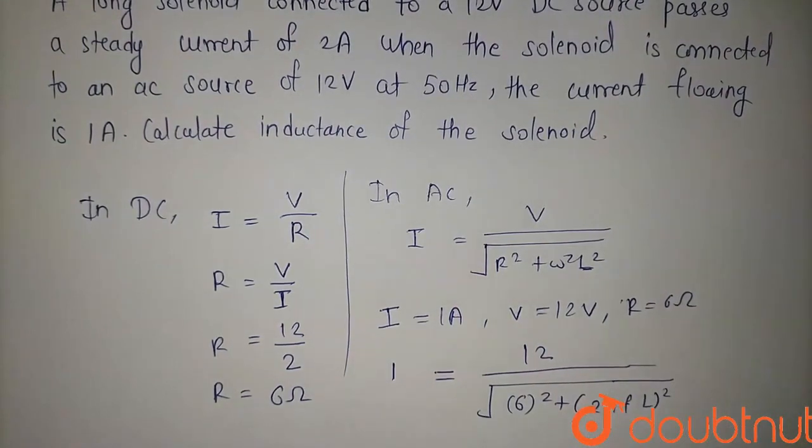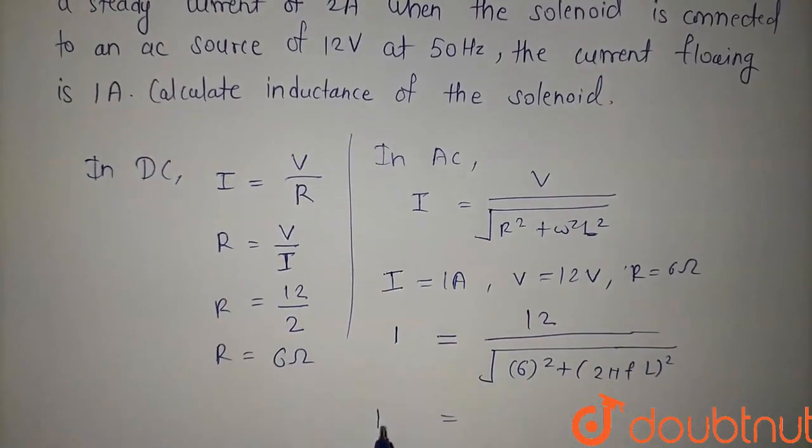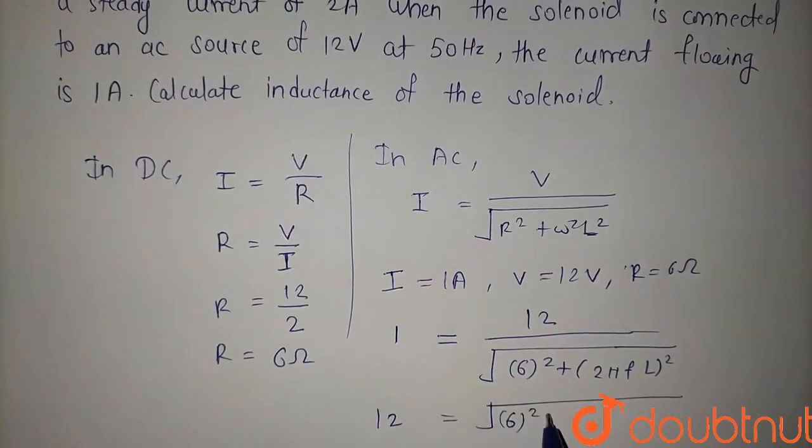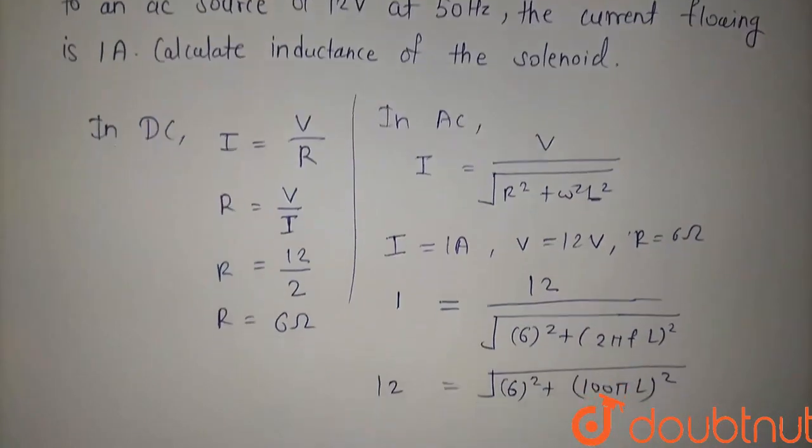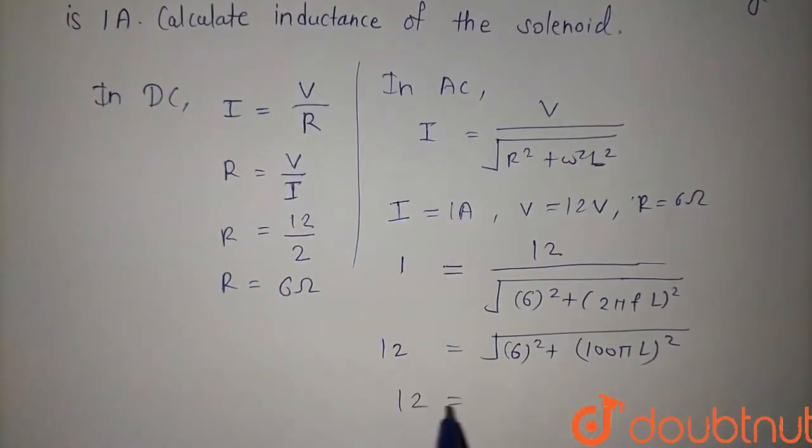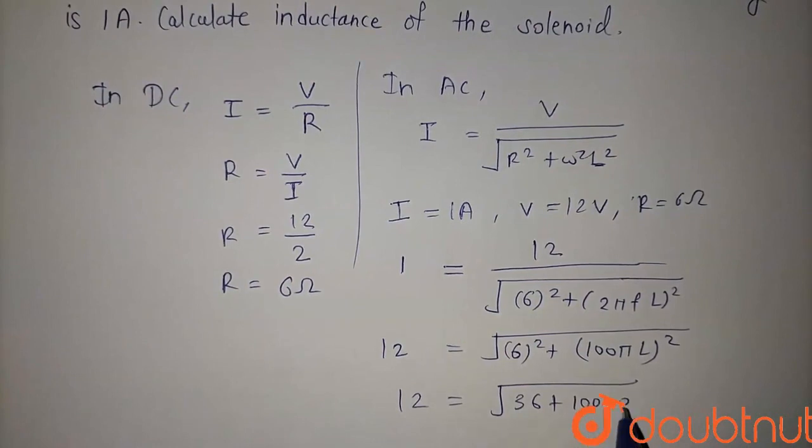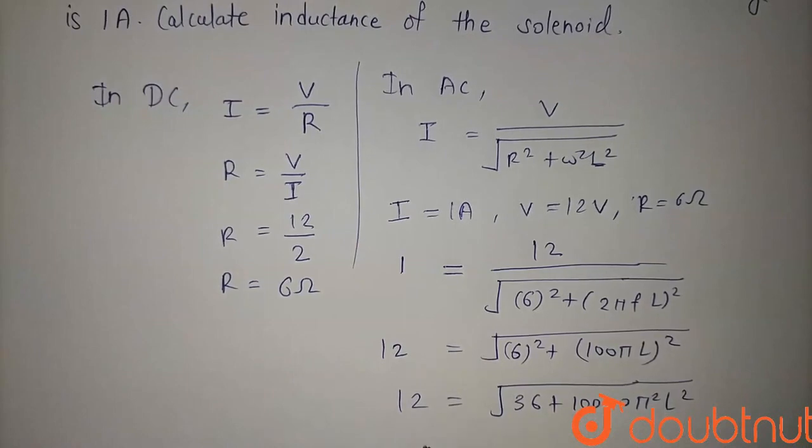So we get 12 equals square root of 6 squared plus 2π times 50, which is 100π, times L squared. Solving this: 12 squared equals 36 plus 10,000 π² L². From this, L will be 33 millihenry.